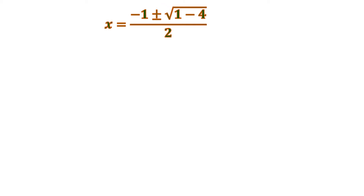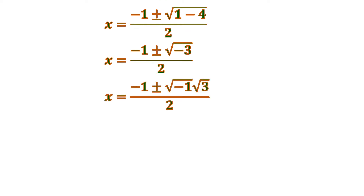We subtract: 1 minus 4 inside the radical sign gives negative 3. So we have the square root of negative 3. You might wonder — is it possible? Yes, it is possible to have a square root of a negative number. That involves imaginary numbers. We separate the square root of negative 3 into square root of negative 1 and square root of 3. Since square root of negative 1 equals i, the imaginary number, it becomes i times square root of 3.